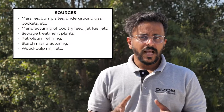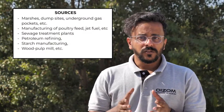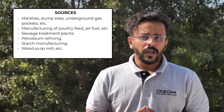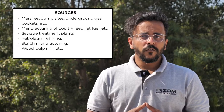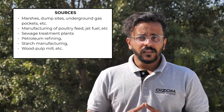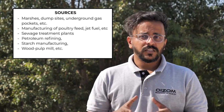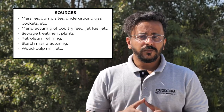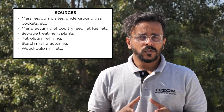Methylmercaptan is naturally emitted from marshes, dump sites, underground gas pockets, and so on. Industrial sources of methylmercaptan include manufacturing and use of methionine — a poultry feed — pesticides, jet fuels, oil shale, plastics, and so on.